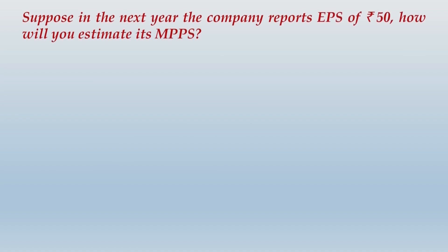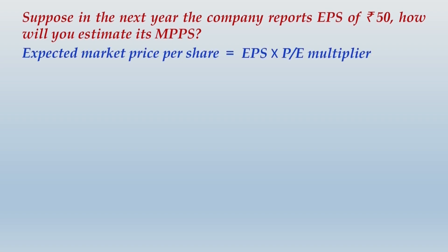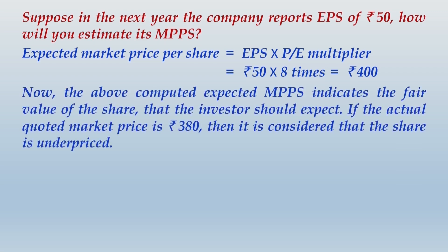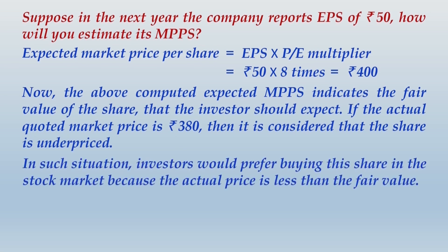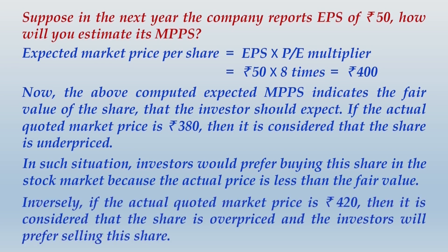The role of the PE multiplier: suppose next year the company reports EPS of ₹50. Expected market price per share = EPS × PE multiplier = 50 × 8 = ₹400. This computed expected MPPS represents the fair value of the share. If the actual quoted price is ₹380, the share is underpriced — advise to buy. If the actual price is ₹420, the share is overpriced — investors would prefer to sell.